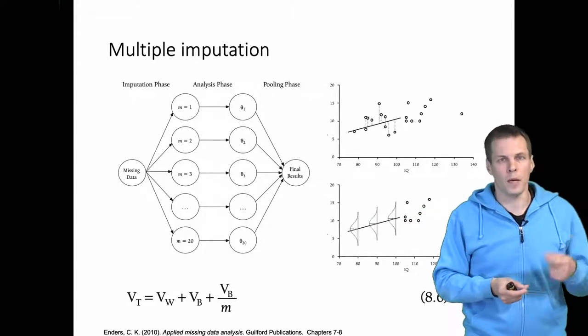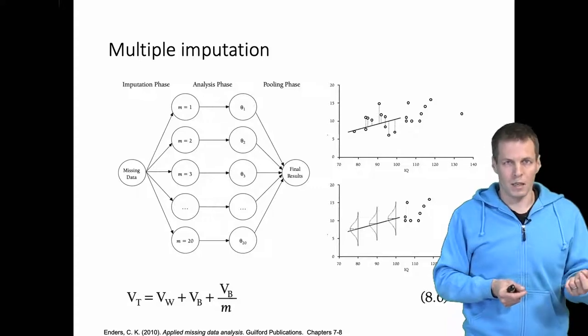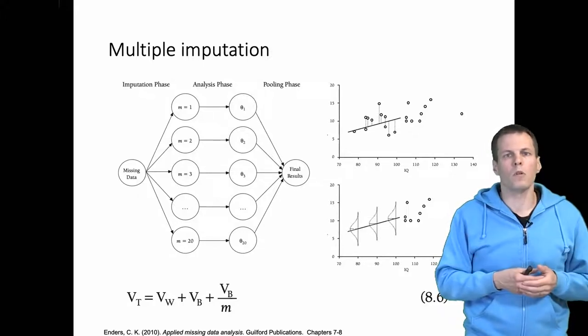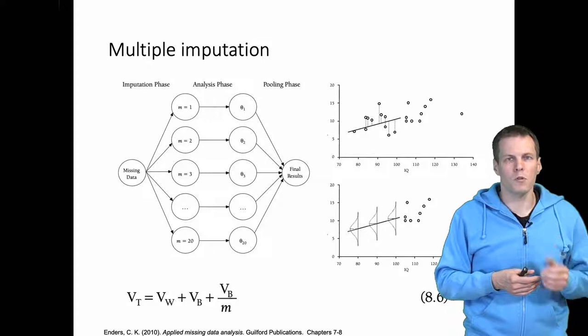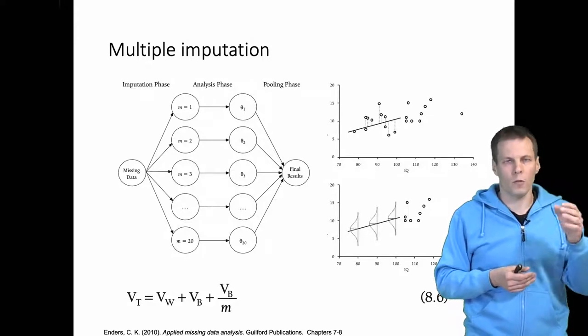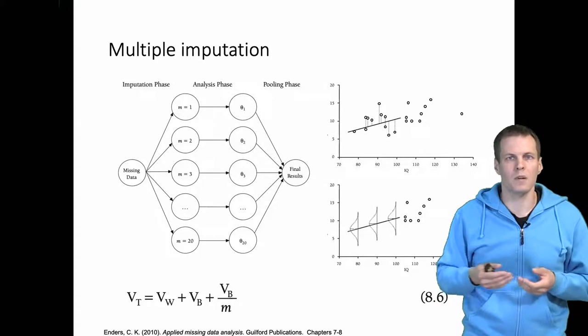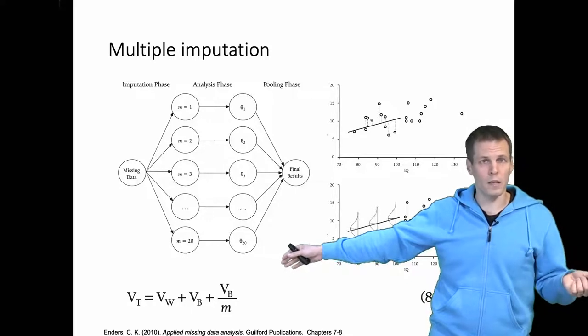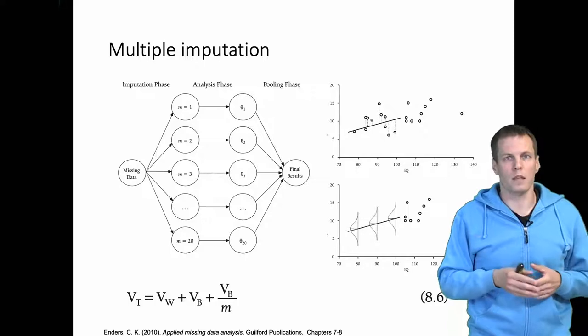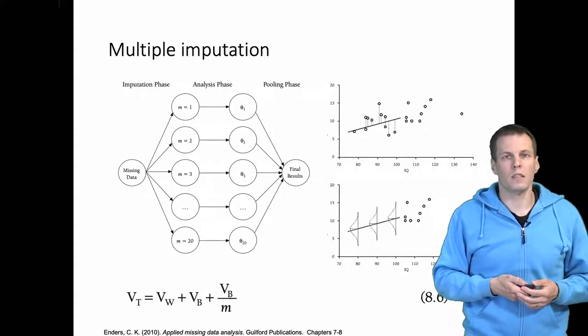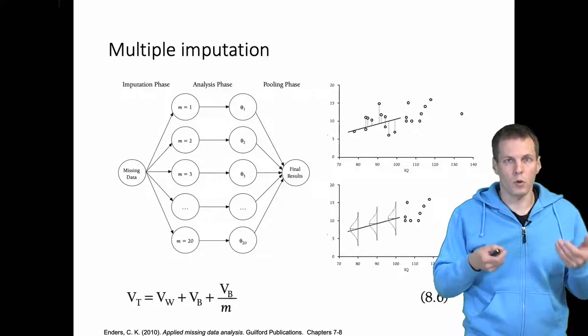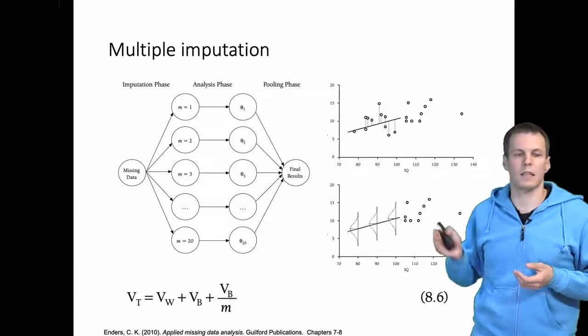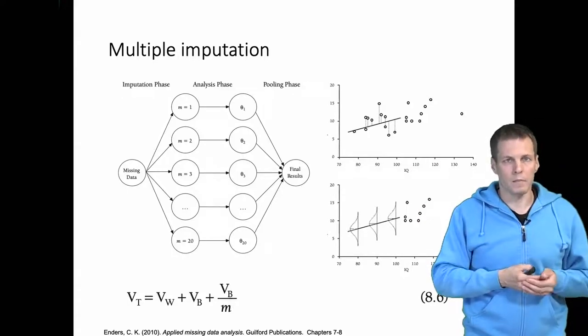For example, if you apply an imputation technique that your statistical software does not support. So this is a very simple idea: you impute multiple times, you analyze the imputed data sets, you take the mean of those estimates and that's your best guess of the final estimate, and then you calculate the standard error based on the variance of the estimates between and within estimation. So the within is the normal standard error, between is how much the variation is because of the imputation process. And that gives you more precise standard errors than simply using one of these data sets and the standard errors from that.